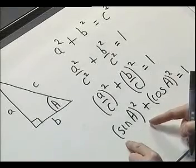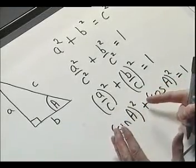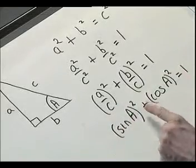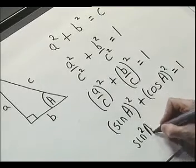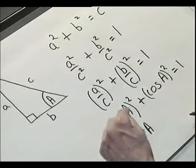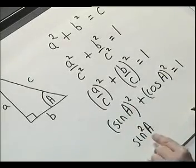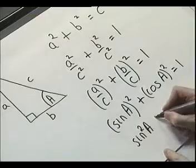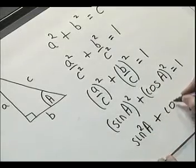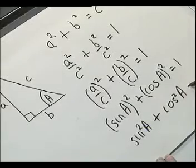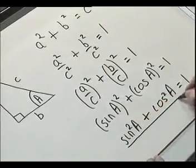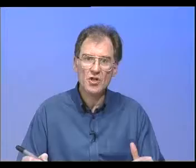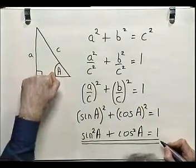Now the notation: rather than writing sine A squared — which might be confused with squaring the A — we put the square on the sine. So the notation for sine of A times sine of A is sine squared A, written like that. Plus cos squared A equals 1. Now that is an identity, because it is true for all angles A in a right-angled triangle.